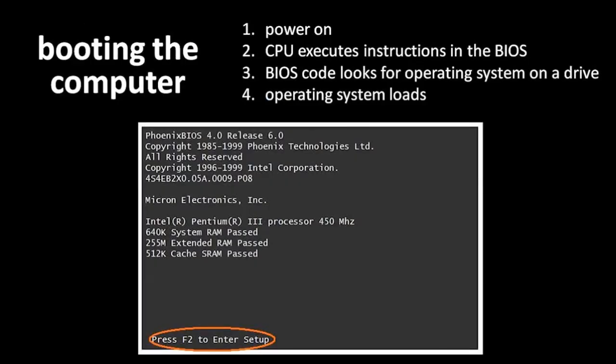When a computer system is powered on, it goes through a process we call booting. The first thing that happens after the power is turned on is that the CPU executes instructions in a chip on the motherboard called the BIOS. The BIOS is simply a chip which stores a small amount of code, and the CPU looks there to find its first instructions. What this code in the BIOS then has the CPU do is look for an operating system on one of the storage drives in the system, most likely a hard drive. When an operating system is found, it is loaded into memory, and the CPU starts executing that operating system code.